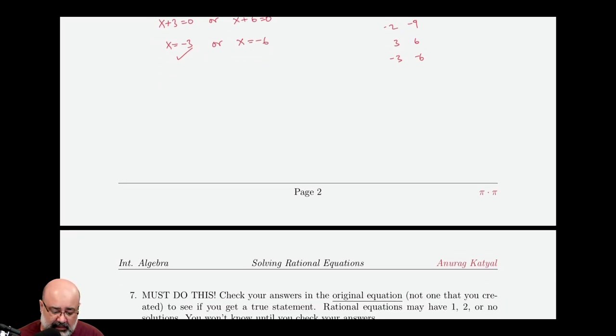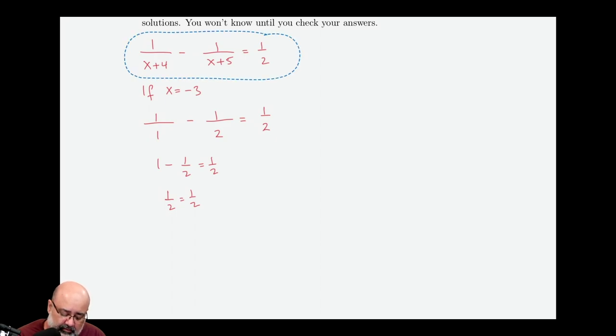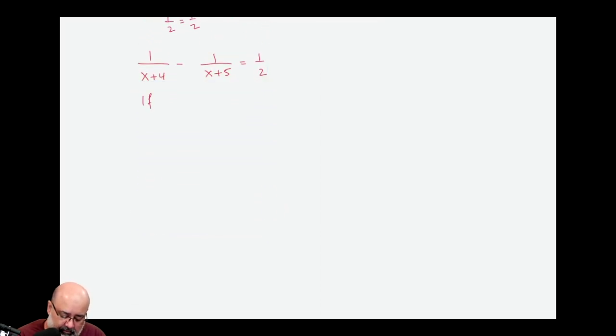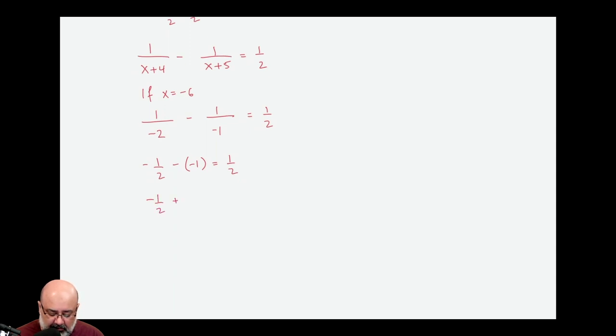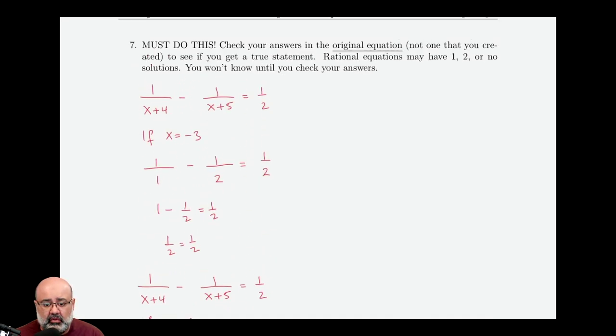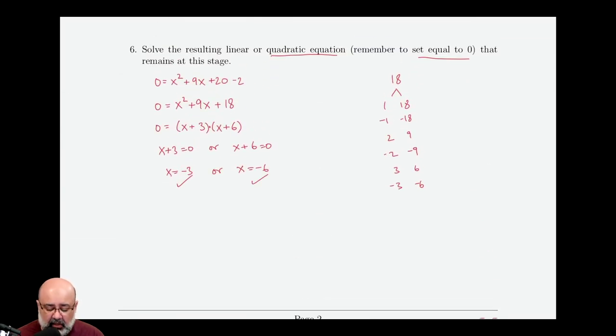Now we have to verify x equals negative 6. This would turn into 1 over negative 6 plus 4, which is negative 2, minus 1 over negative 6 plus 5 is negative 1, equals 1 over 2 times negative 6. 1 over negative 2 is just negative 1 half. Minus 1 over negative 1 would be negative 1. Negative and a negative is a positive, so this turns into negative 1 half plus 1 equals 1 half, which is again 1 half equals 1 half. Also a true statement, which means both of these numbers are solutions to our equation.